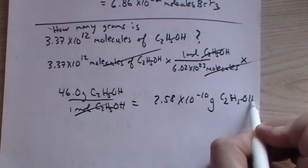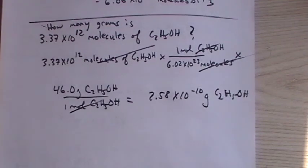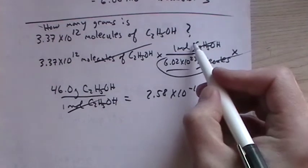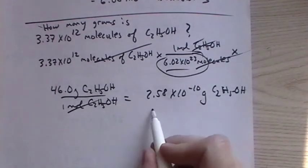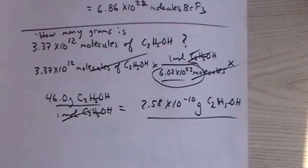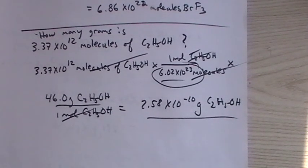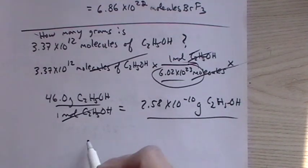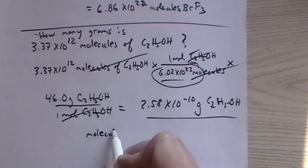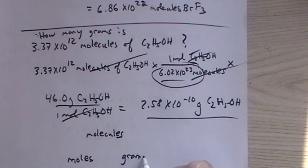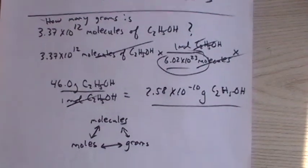So even though it seems like a large number, it's so much smaller than Avogadro's number, which is one mole, that we end up with a very small mass. Not as small as when we had just one molecule, but even a trillion molecules is a very small mass. That was just thrown in to show we can go between molecules, moles, and grams with these different types of conversions.